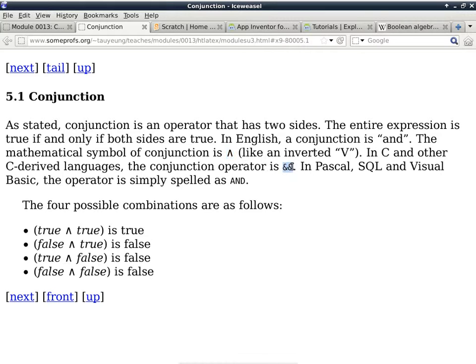In C and other C-derived languages, the conjunction operator is double ampersand, not a single ampersand. There is another operator which is a single ampersand, and it's called a bitwise AND, not a logical AND. It is also a valid operator in C and C++, but it does something that is similar but not exactly the same as a logical AND.